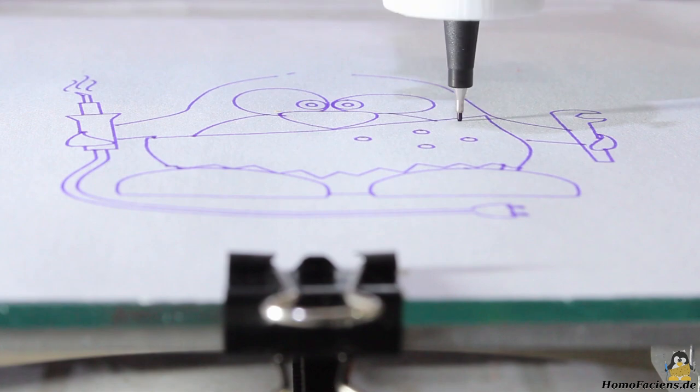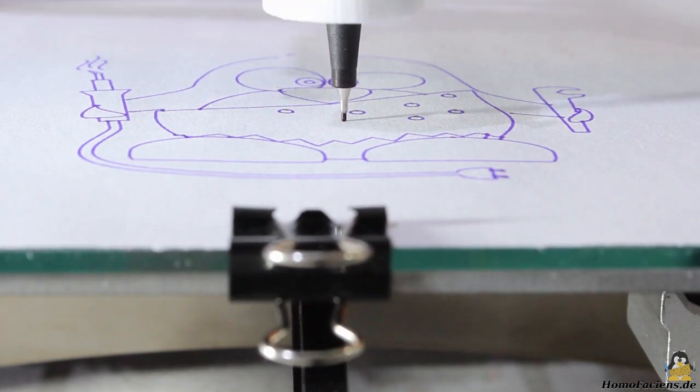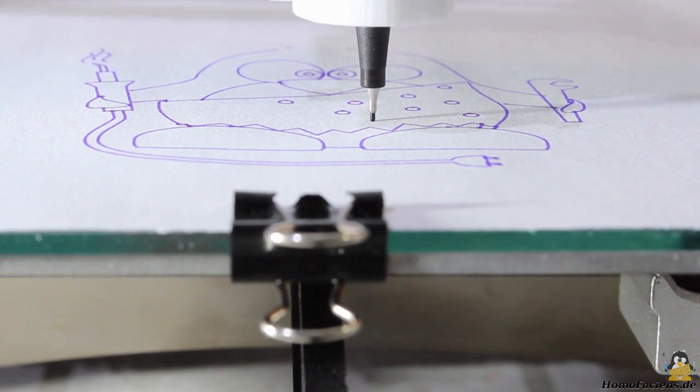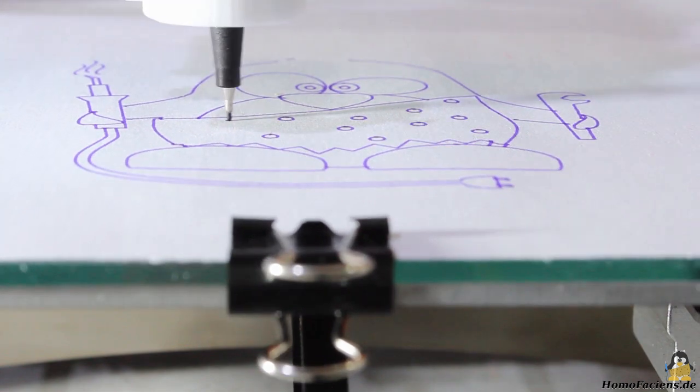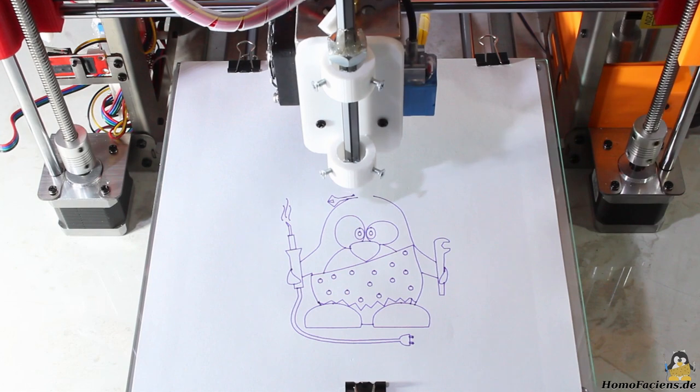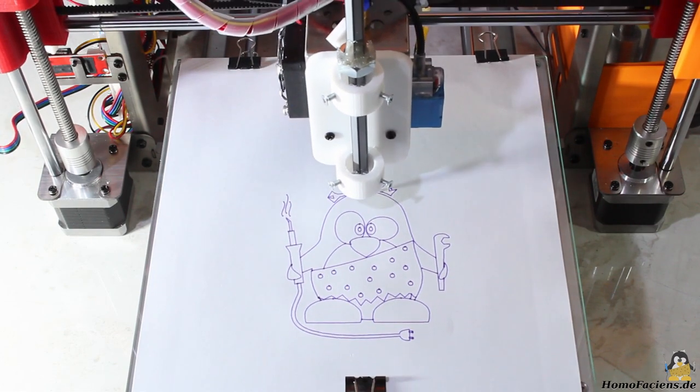The default maximum speed of that movement is set to no more than 2mm per second in the Repetier firmware. To speed up my plots, I have adjusted that value to 100mm per second through the printer menu. With those adjustments, the plot was finished after approximately 2 minutes.